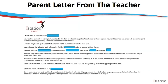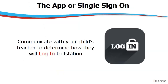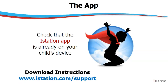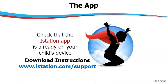Now let's see how your child is going to use the program. We first need to know if your child will be logging in directly to the app or using a single sign-on system. Then check if the iStation app is already on your child's device. If you are using a school or district device and you do not see the app, please contact the teacher to get the app on the device. If you are using your own device, you can follow the instructions on the website, istation.com/support, for further information and support.